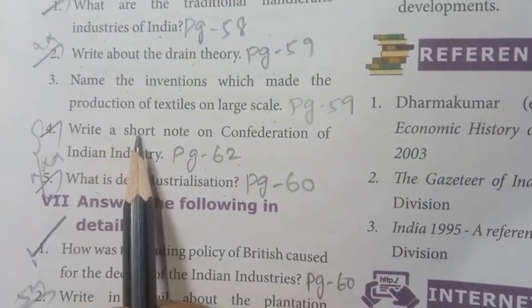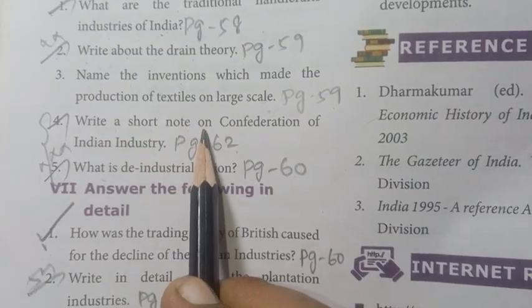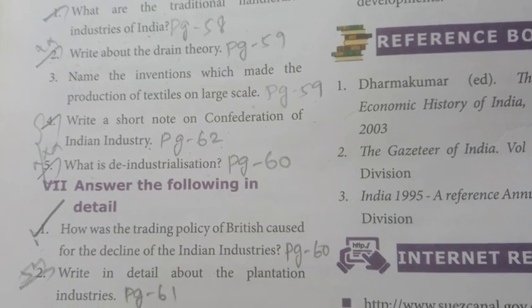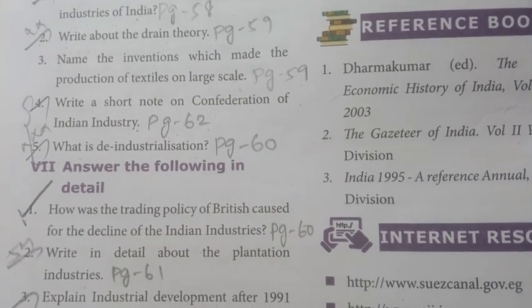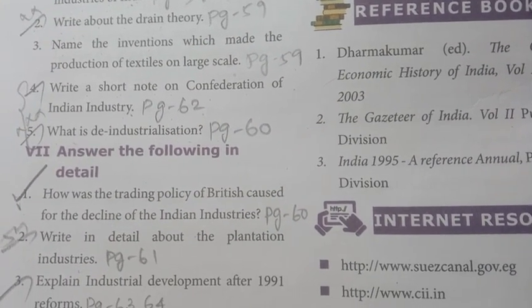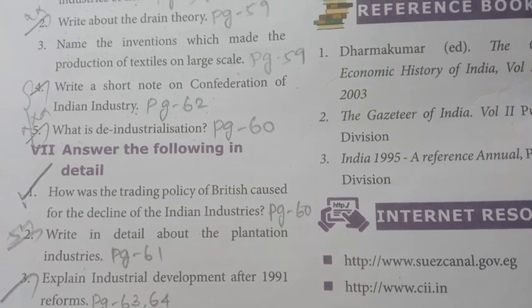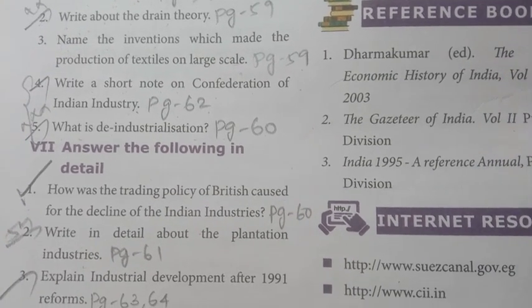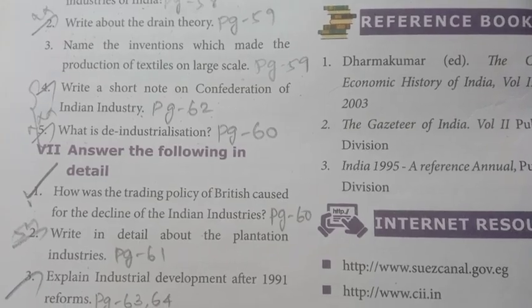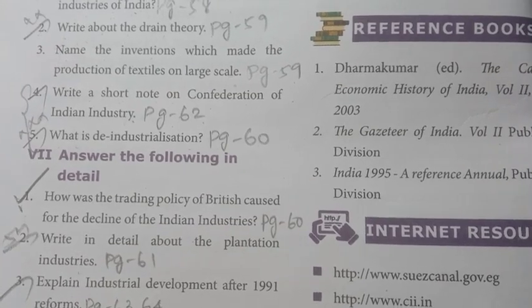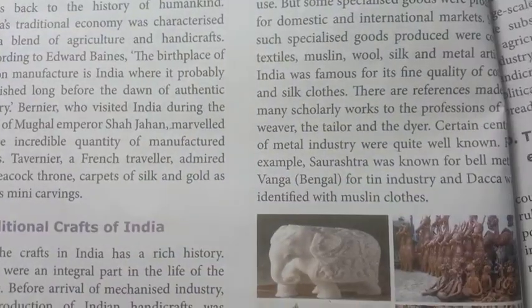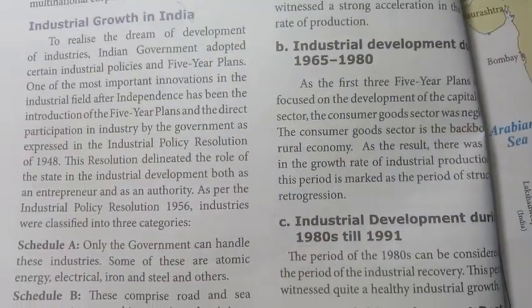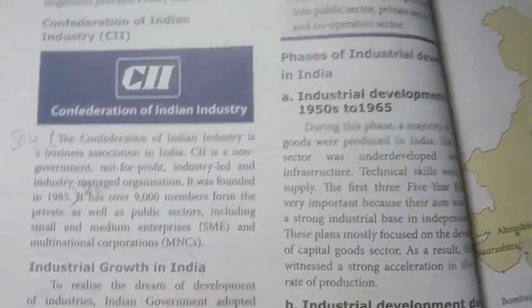Then the fourth question: write a short note on the Confederation of Indian Industry. Page number 62.